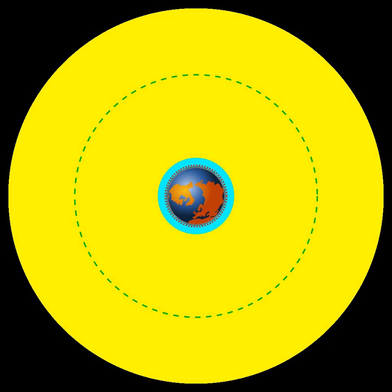Areosynchronous orbit, ASO, a synchronous orbit around the planet Mars with an orbital period equal in length to Mars' sidereal day, 24.6229 hours.